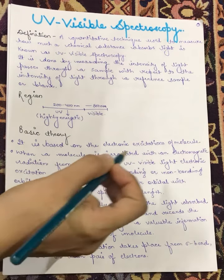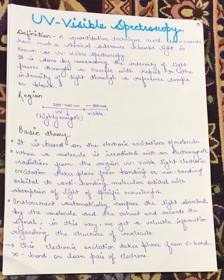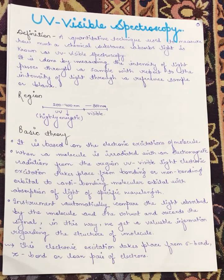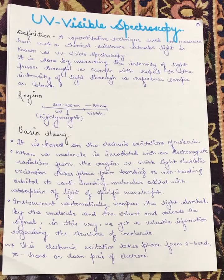UV-visible spectroscopy is based on the electronic excitations of molecules. When a molecule is irradiated with electromagnetic radiation from the UV-visible region, electronic excitation takes place from bonding or non-bonding orbitals — that is, from sigma bonds and pi bonds — causing the electrons to excite.